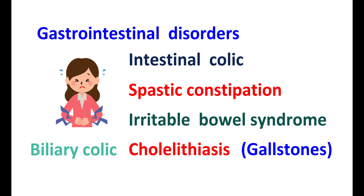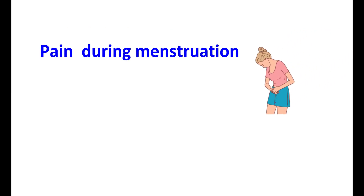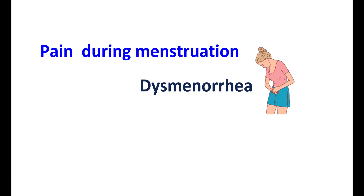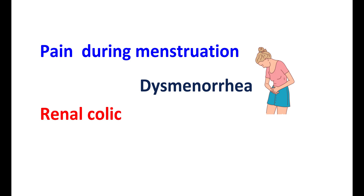Drotavarine acts as an antispasmodic, thereby it can produce relaxation of the smooth muscle and it reduces the pain associated with biliary colic. Similarly, this medication can also be used to relieve the pain during menstruation — the condition called dysmenorrhea. As it acts as an antispasmodic, drotavarine can also be used to relieve renal colic and even in a few settings it can be used to control labor pain.